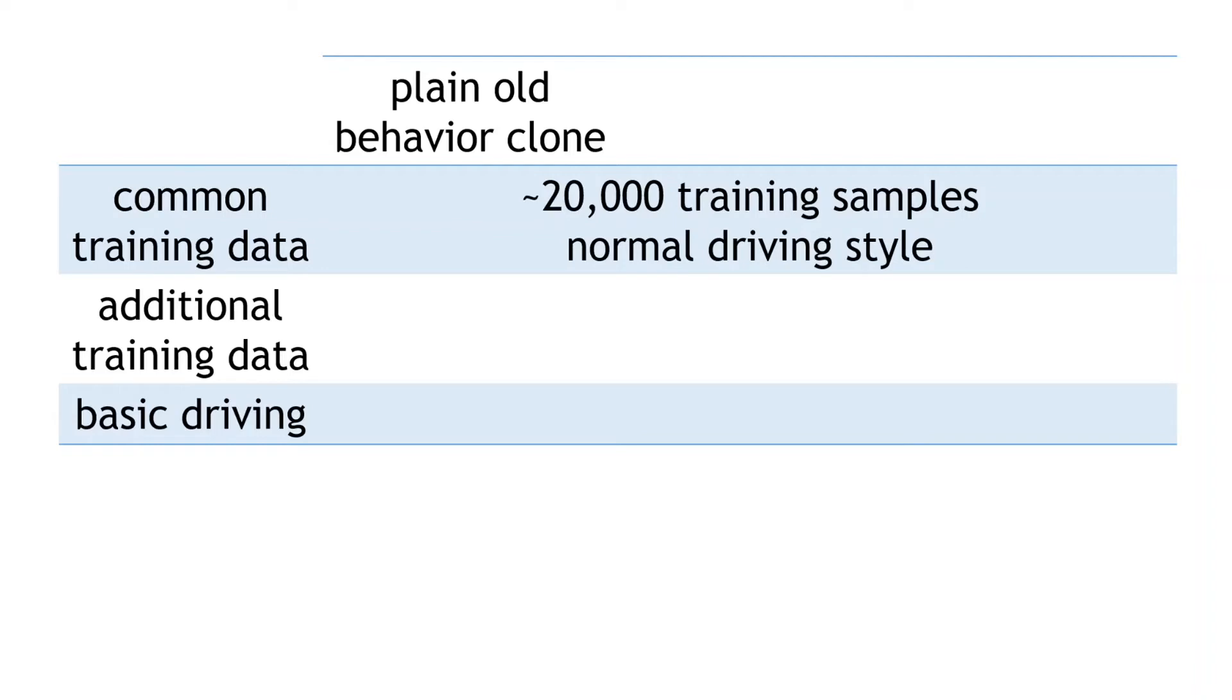There were also an additional 4000 image samples, again using the normal driving style. In total, around 24,000 images were used to train the policy. And as you saw in the last video, the basic autonomous driving results, well, they were less than ideal.